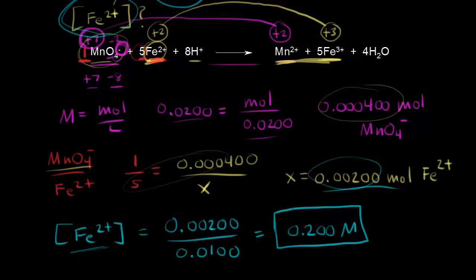You could also use the MV = MV equation modified for this situation, since our mole ratio isn't 1-to-1. But I prefer to sit down and do these calculations step by step and think about exactly what's happening.